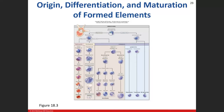We have our pluripotent stem cell — this is the starting cell, and it can differentiate either into the myeloid line or the lymphoid line. We differentiate into the myeloid line, and we have our multi-colony stimulating factor that acts on it and promotes it into erythropoiesis, becoming a red blood cell. We can go down this line with our multi-CSF.